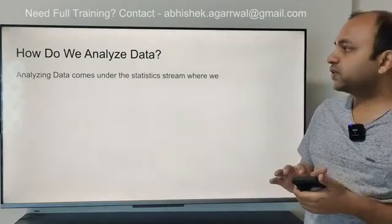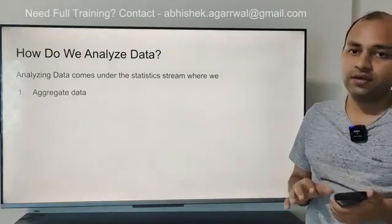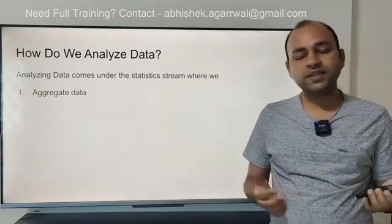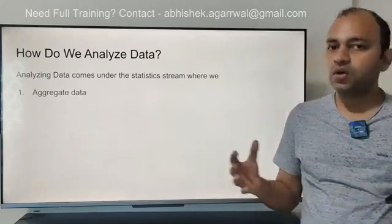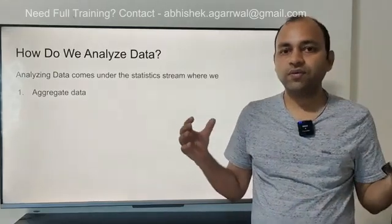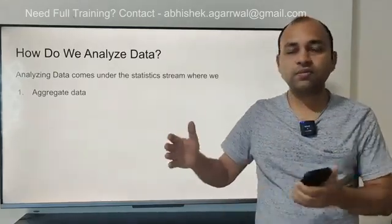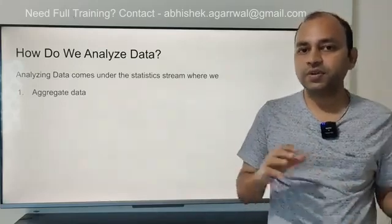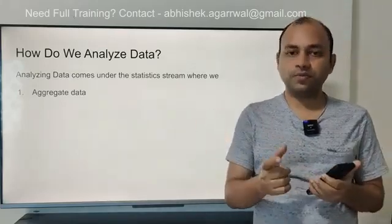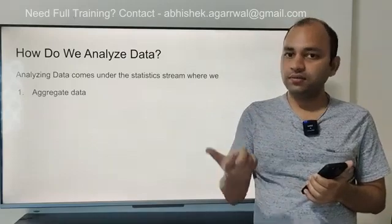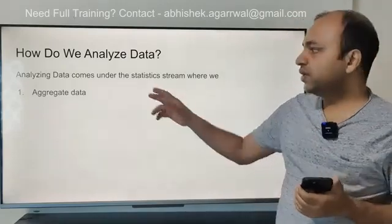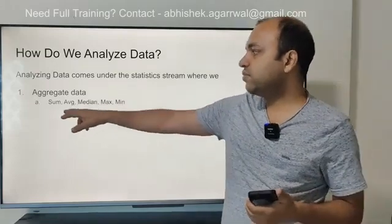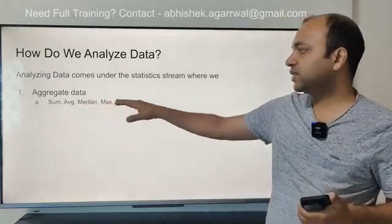First thing is aggregation of data. What do we mean by aggregate? For example, if you have a group of different people — a group of five or six people — you have counted those people. That is nothing but aggregation. In aggregation, you have different methods like sum, average, median, maximum, or minimum.